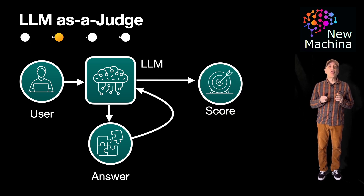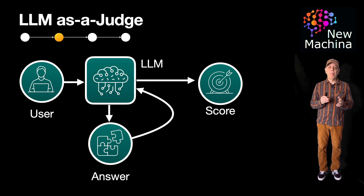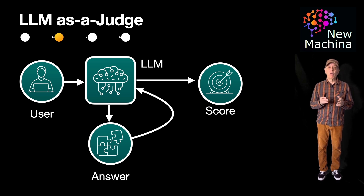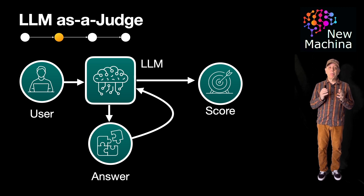Our third architectural option is simply called self-judge. In this approach, the same LLM generating the response also critiques its own answers. Quite often, this approach is used for self-improvement or quality checks. Quite simply, the LLM looks at its own response and gives itself a grade.